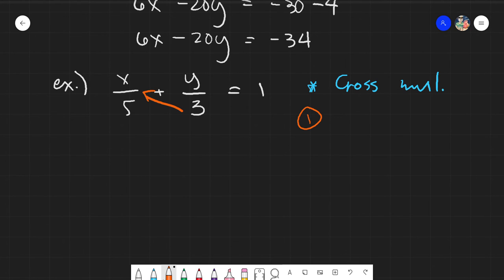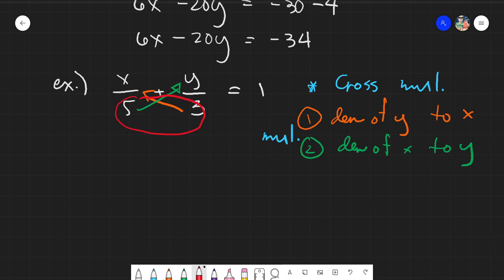So this would be 3 times x. Next rule, this one. So the denominator of x to y. So what you need to do here is you need to multiply. And lastly, rule number 3. This one times the right side. So last rule would be the product of the denominators times the right side.